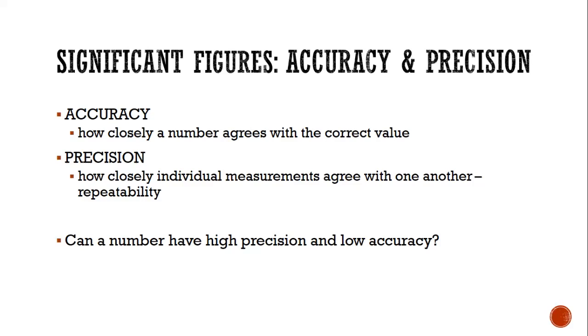Precision. How close does one measurement come to another? In other words, when you have, let's say you have a group of students reading and every single student reads the graduated cylinder and privately writes down their answer and they all put down 3.1 milliliters. That is very precise.